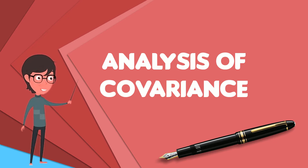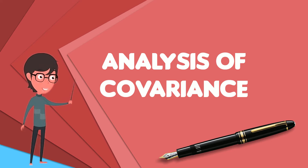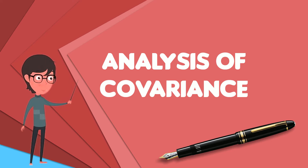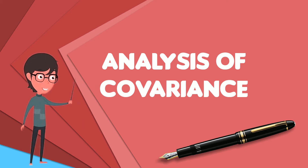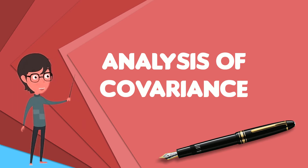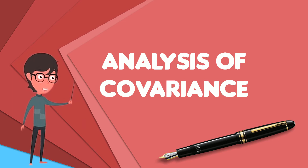In this equation, the DV, Y_ij, is the jth observation under the ith categorical group. The CV, X_ij, is the jth observation of the covariate under the ith group.